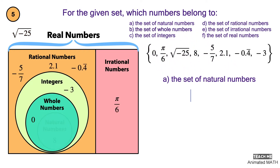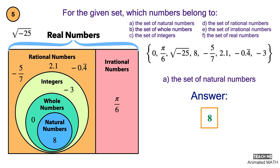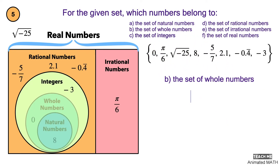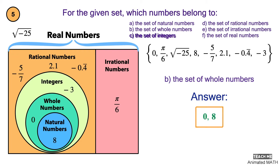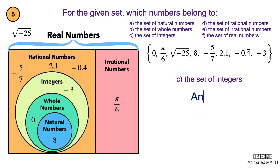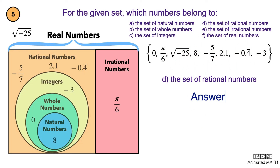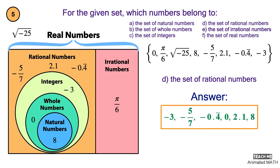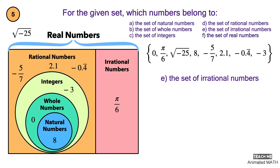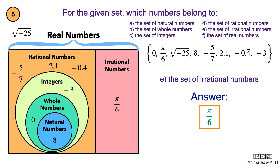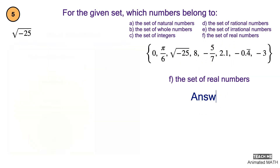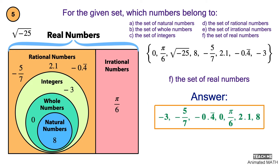The set of natural numbers contains 8. The set of whole numbers contains 0 and 8. The set of integers contains negative 3, 0, and 8. The set of rational numbers contains negative 5 over 7, negative 0.4 repeating, 0, 2.1, and 8. The set of irrational numbers contains pi over 6. The set of real numbers contains negative 5 over 7, negative 0.4 repeating, 0, pi over 6, 2.1, and 8.